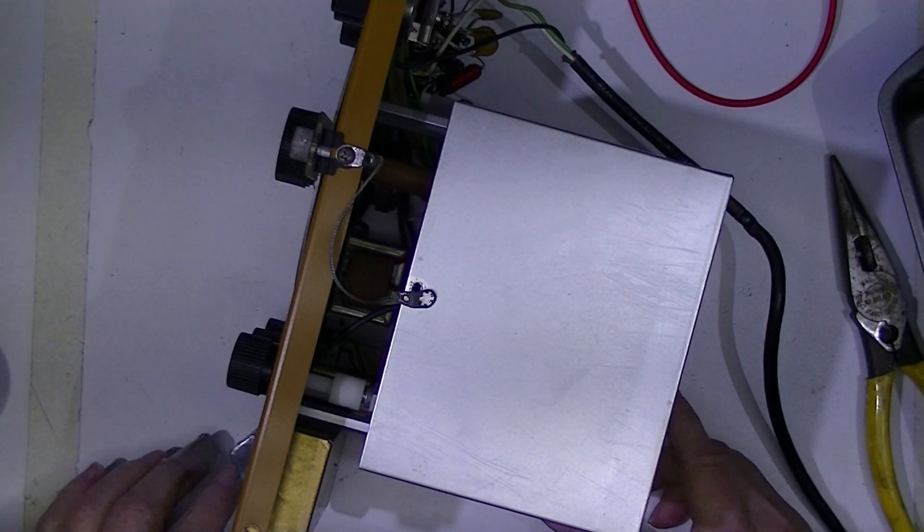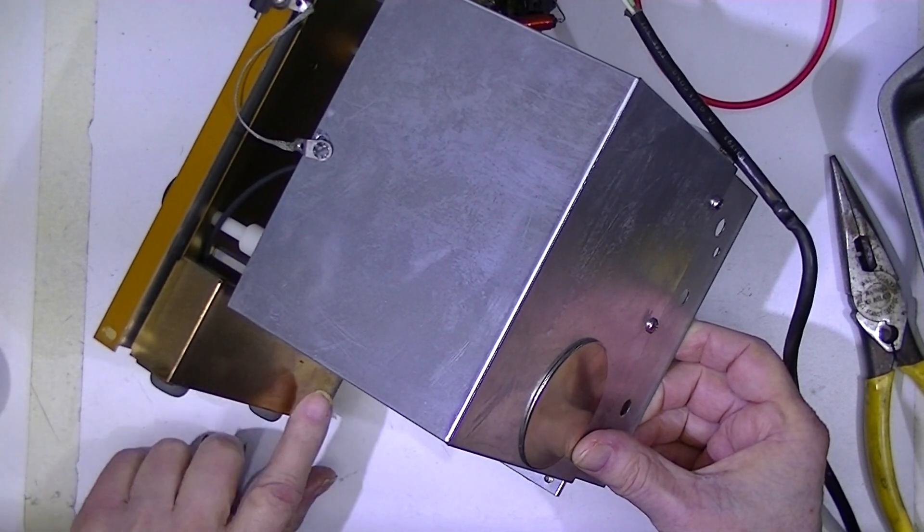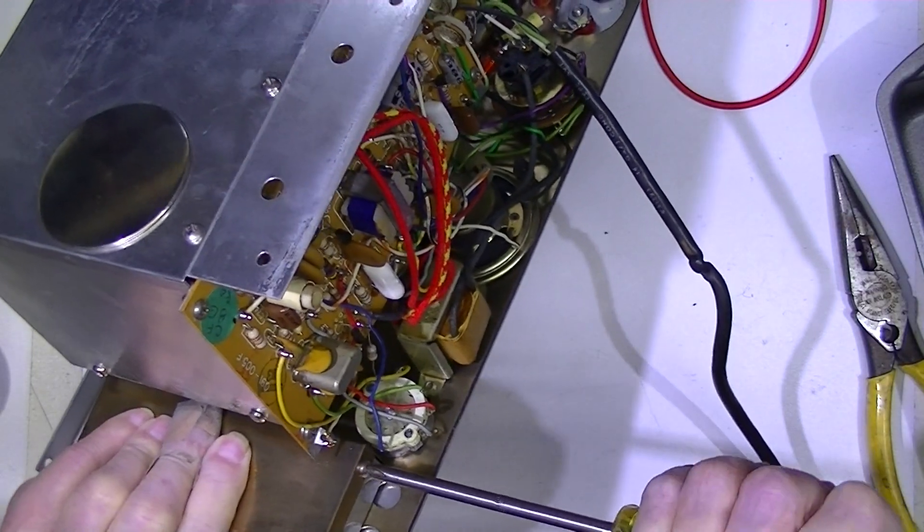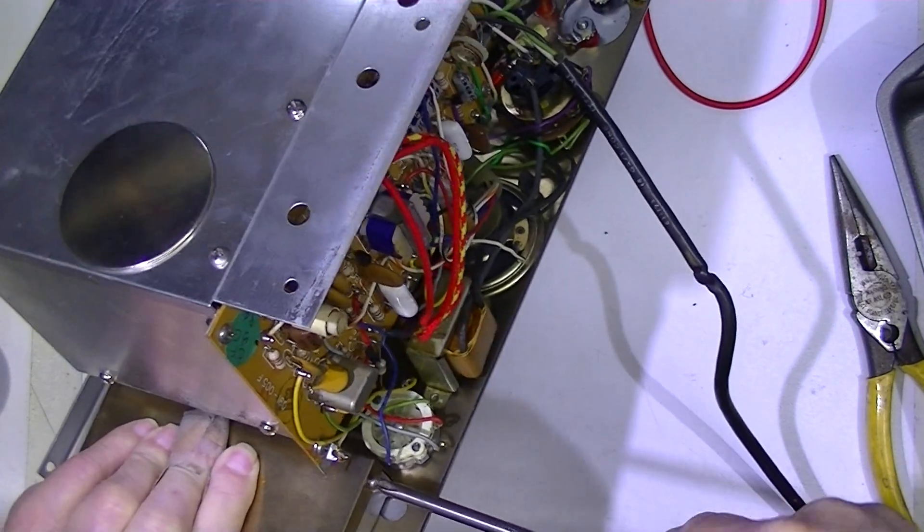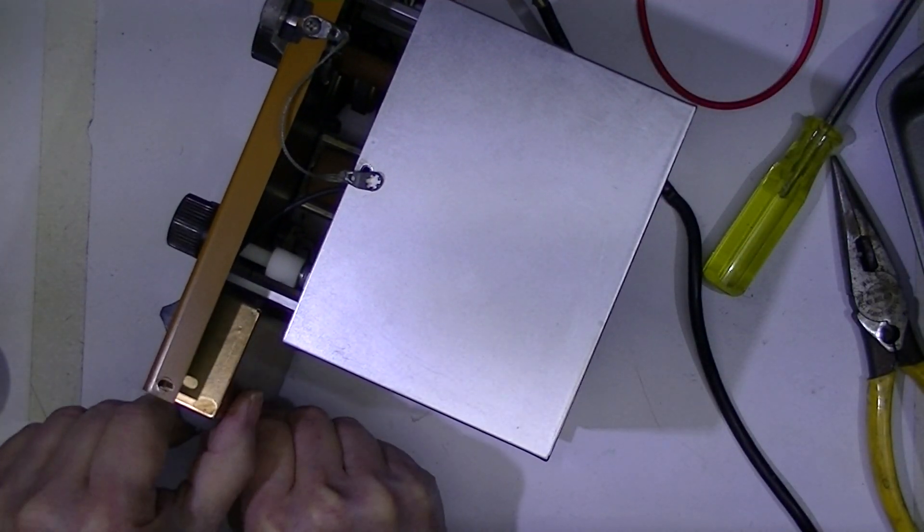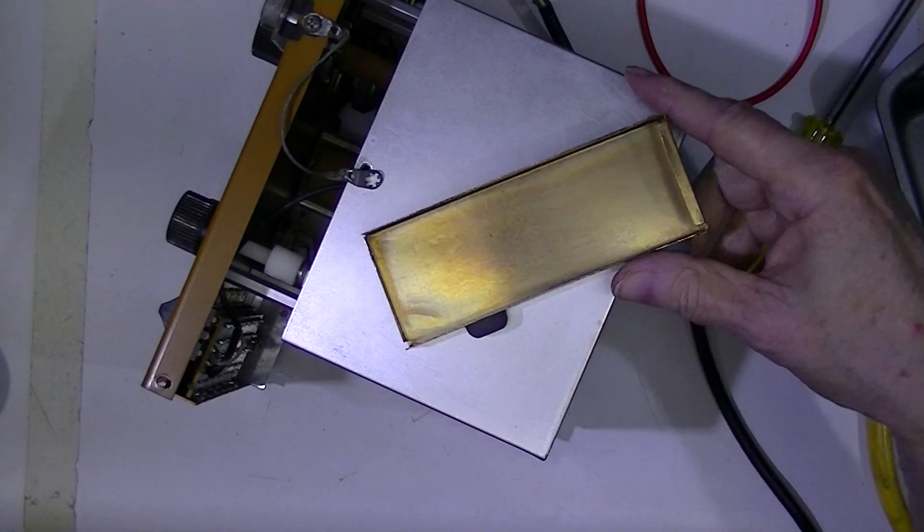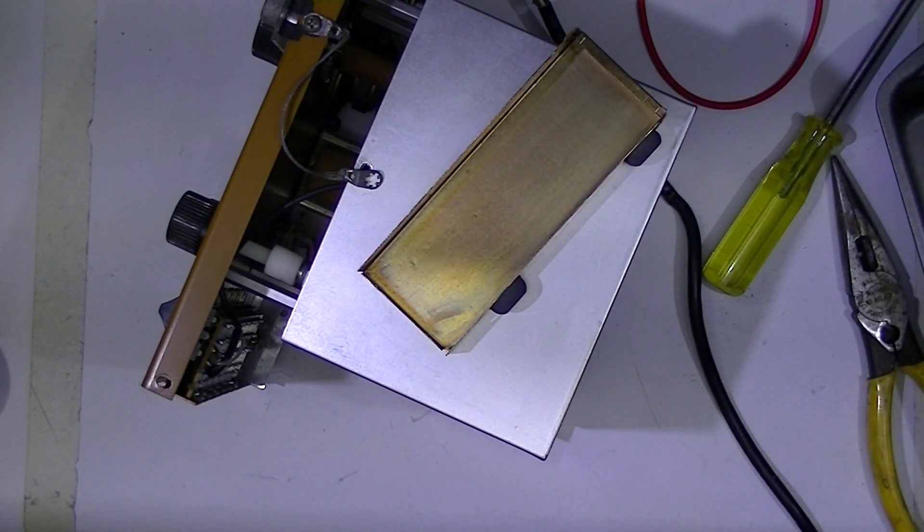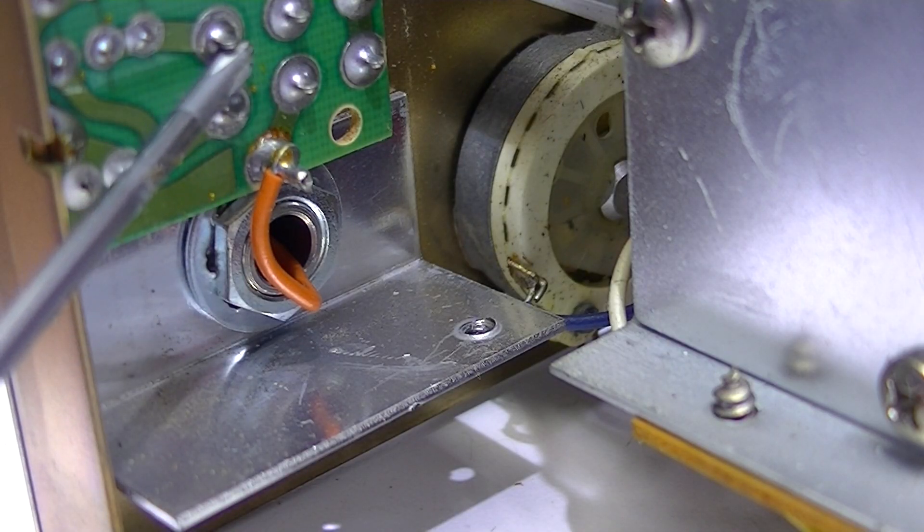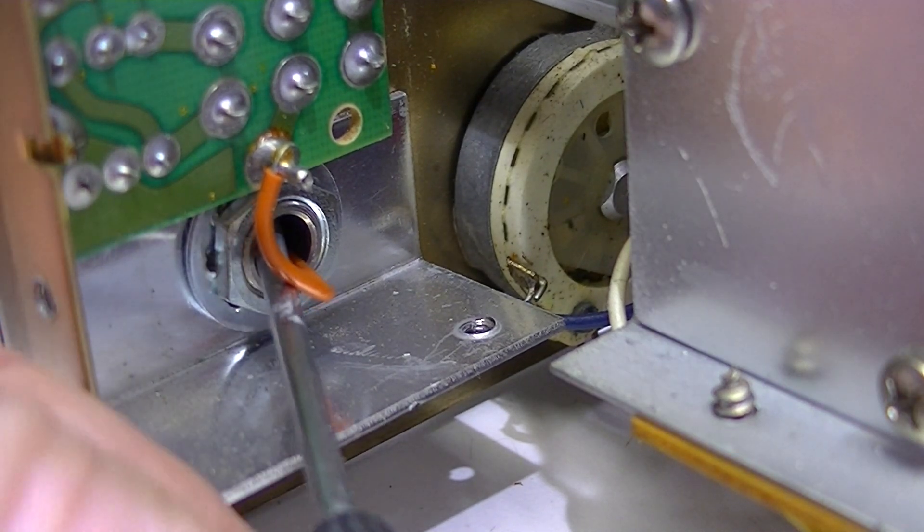The attenuator and the output connector are inside this copper plated sheet metal box. It allows us to take this copper, probably just copper plated, shield off. This is the bottom of the attenuator board. This is the RF output. And you see it disappears into the shell of the connector.